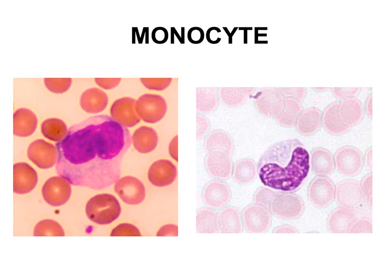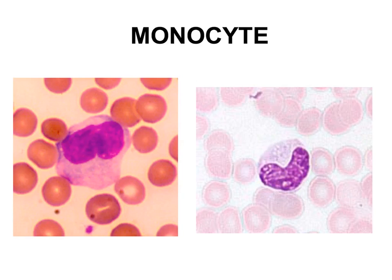Here we have the monocytes. This cell is the largest of the leukocytes, and its nucleus is either U-shaped or kidney-bean shaped. Monocytes account for 3% to 9% of the white blood cell count. An increase in monocytes would suggest something such as malaria, typhoid fever, Rocky Mountain spotted fever, or possibly a type of leukemia.